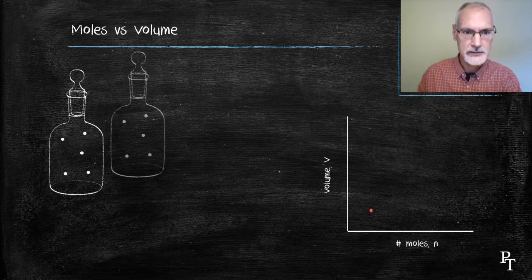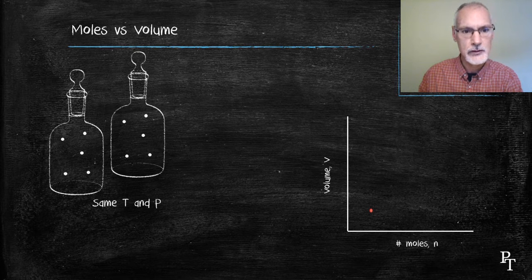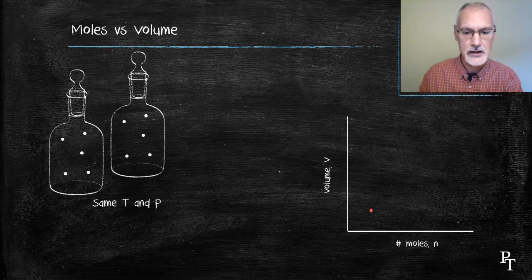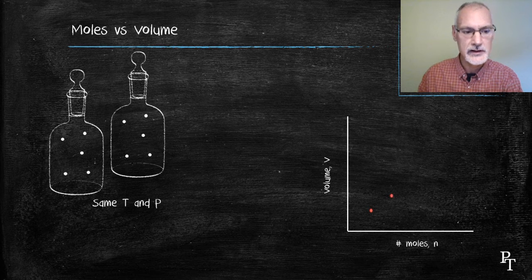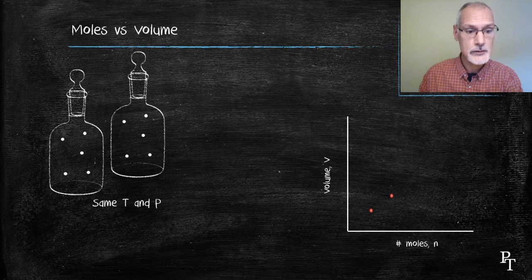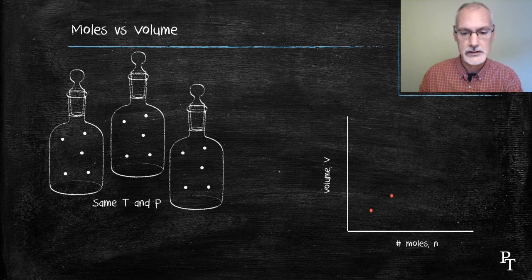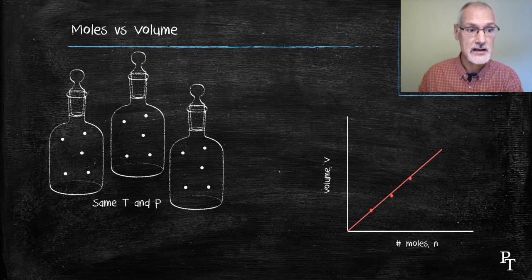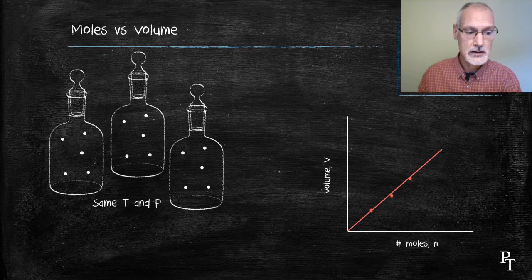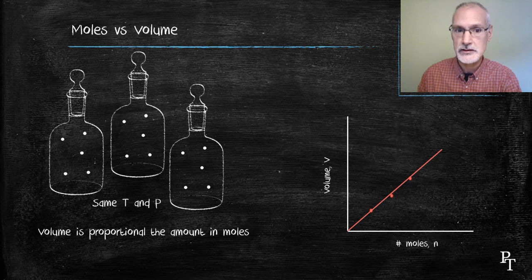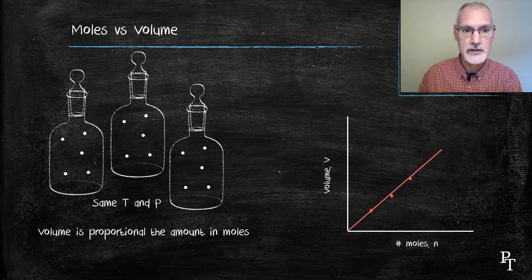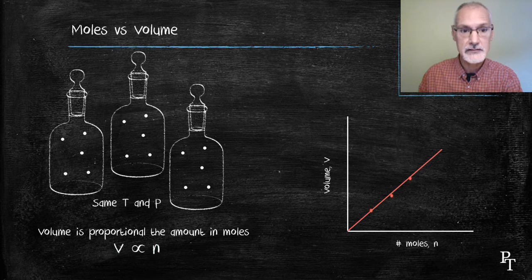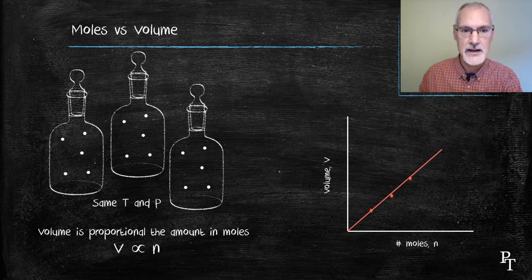If I now double the volume I would have to have double the number of particles according to his law and that would give me the second point. And similarly if I triple the number of particles I would have triple the volume. So here we can see we get a straight line and that allows me to say that at the same temperature and pressure the volume is exactly proportional to the number of moles. Double the volume you double the moles and vice versa and that's shown mathematically in the following.